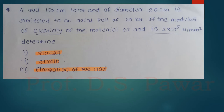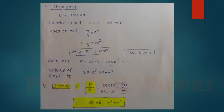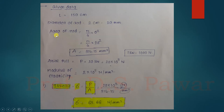How do we deal with this problem? First, write down the given data. Length of rod: 150 cm. Diameter of rod: 2 cm, which converts to 20 mm (since 1 cm = 10 mm). From this diameter we calculate the cross-sectional area: area = π/4 × d² = π/4 × 20² = 314.15 mm². Axial pull P = 20 kN. Converting to Newtons: 20 × 10³ N (since 1 kN = 1000 N). Modulus of elasticity E = 2×10⁵ N/mm².